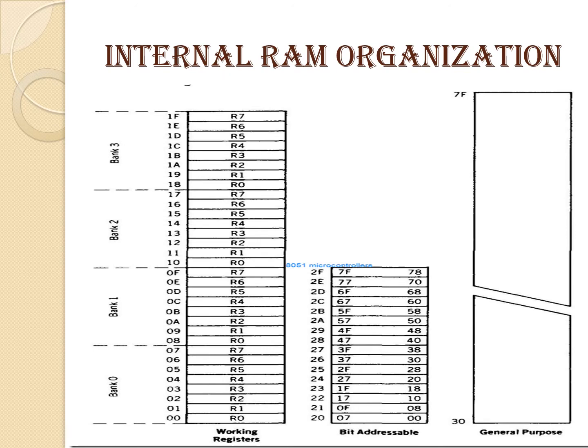The internal RAM organization diagram shows that working registers range from 00H to 1FH, subdivided into four register banks: bank 0, bank 1, bank 2, and bank 3. The specific bank is selected using the PSW register. 20H to 2FH is the bit-addressable area, and 30H to 7FH is the general purpose RAM area.